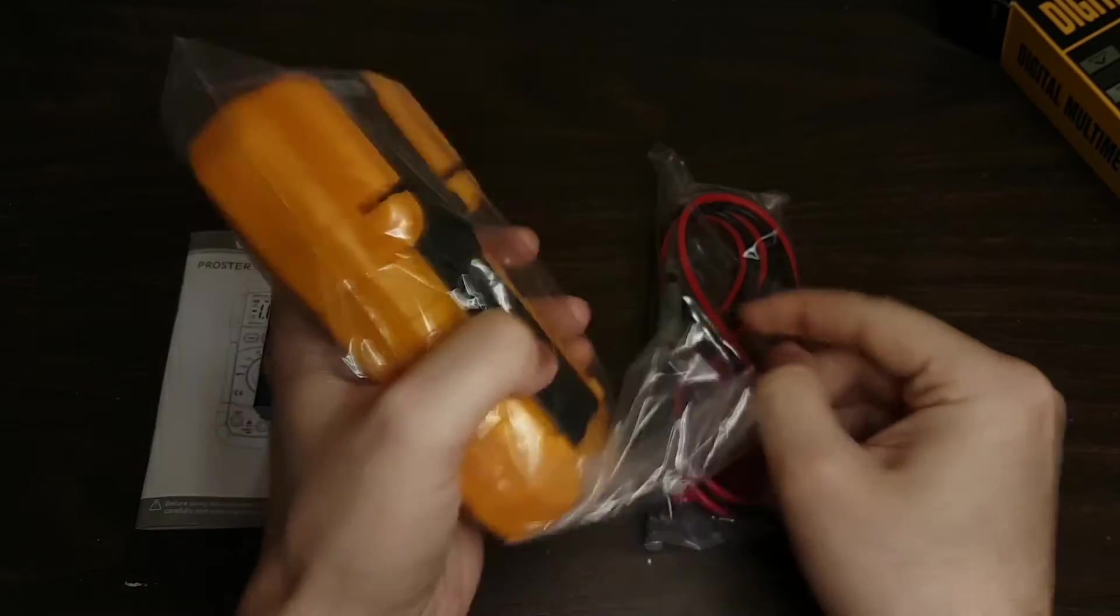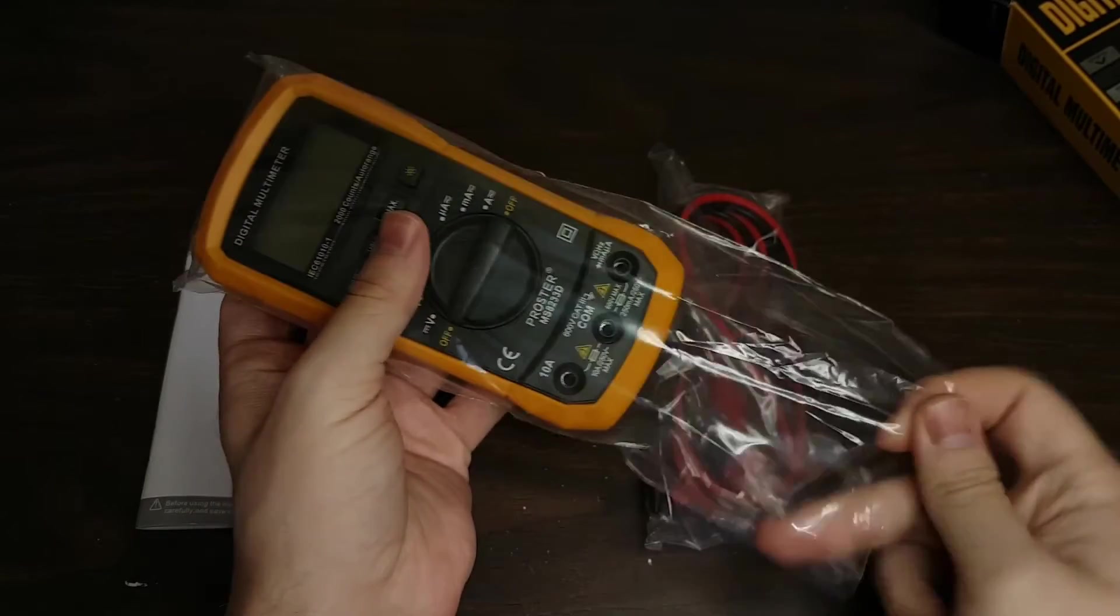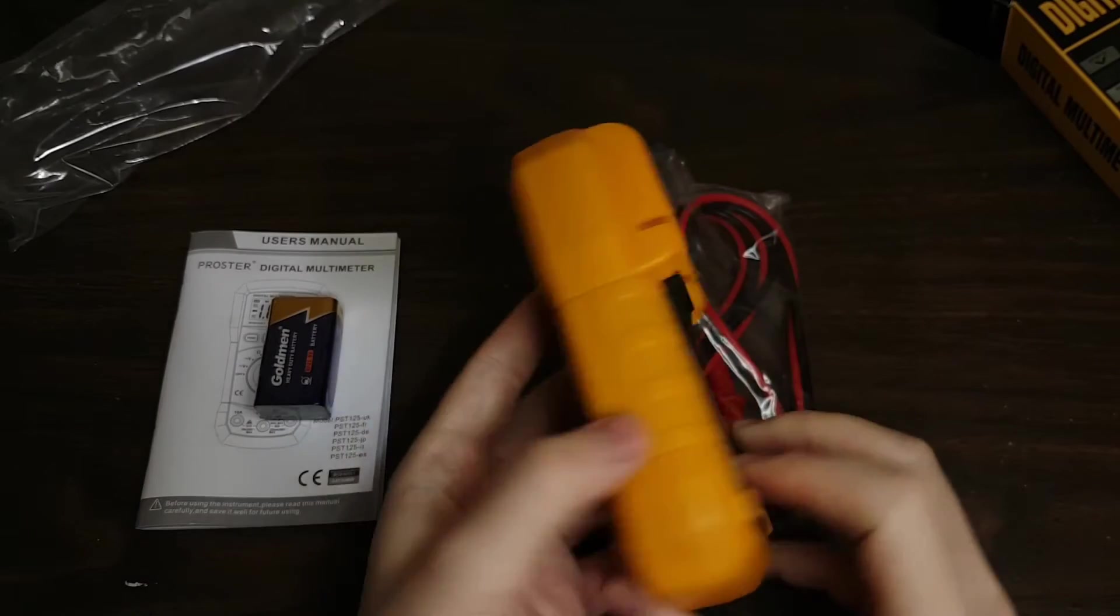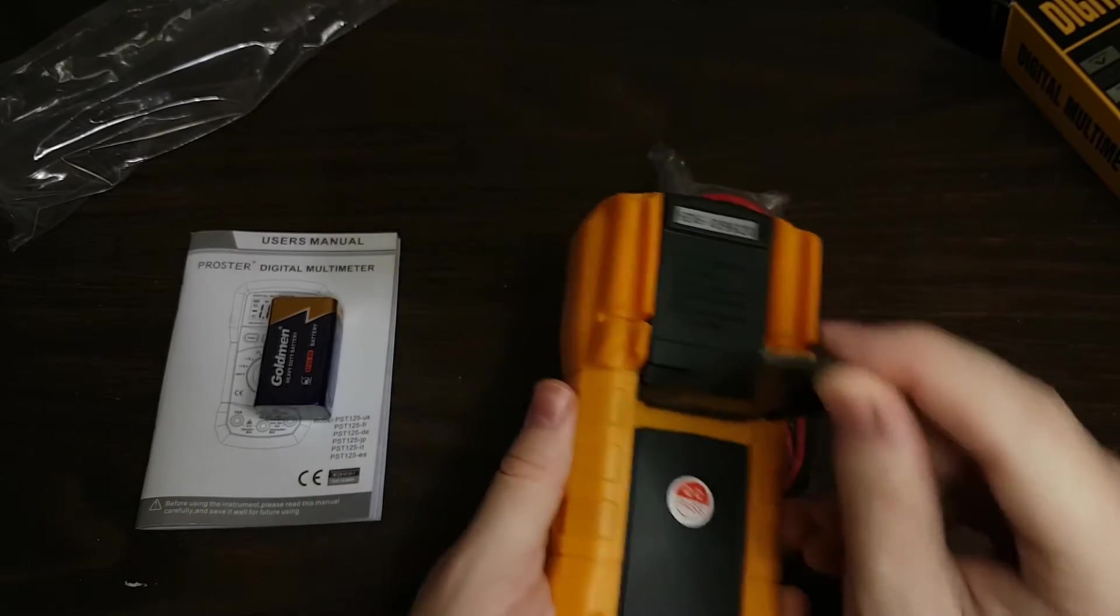So the meter itself is quite heavy. It has a nice heft to it that makes it feel sturdy in the hands. And then we have the rubber casing on the outside.